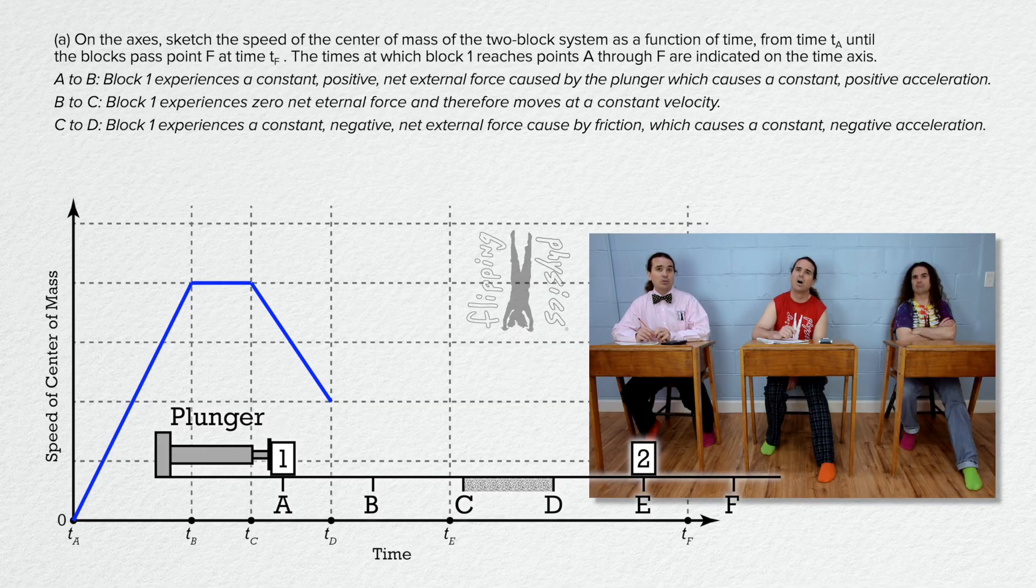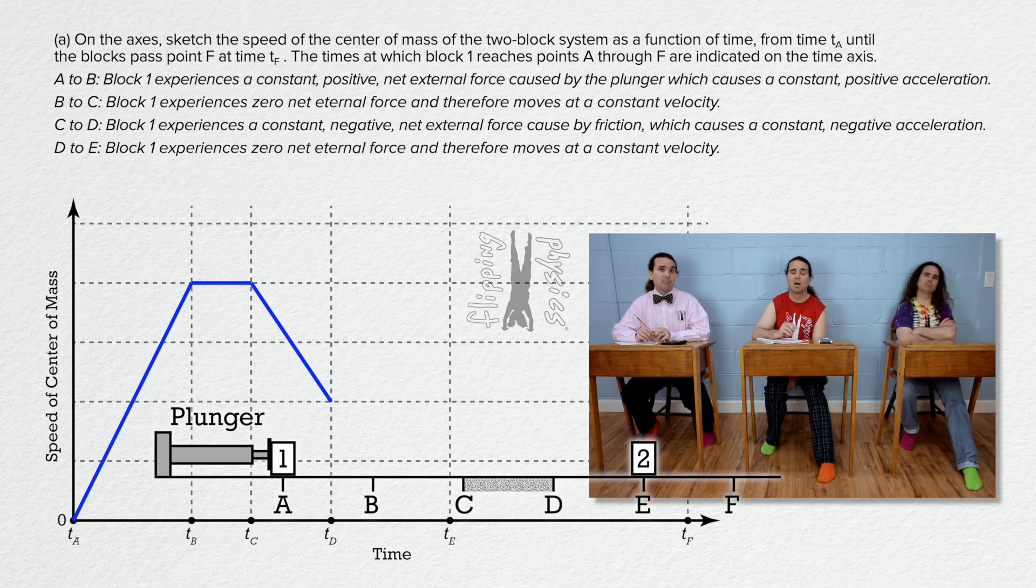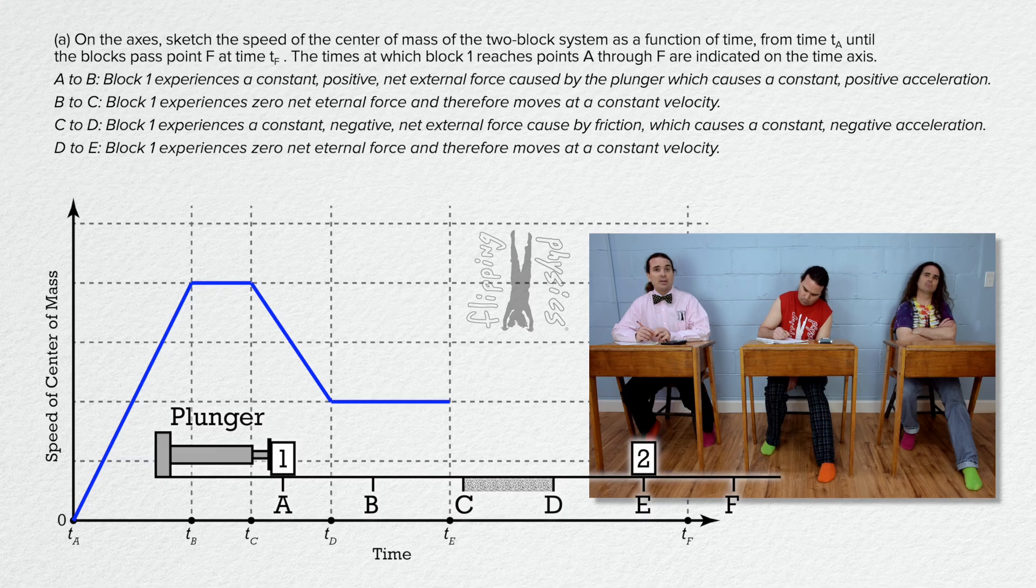As block 1 goes from D to E, there is no friction, just like from B to C, so draw a horizontal line again. But when block 1 is at point E, it collides with block 2.